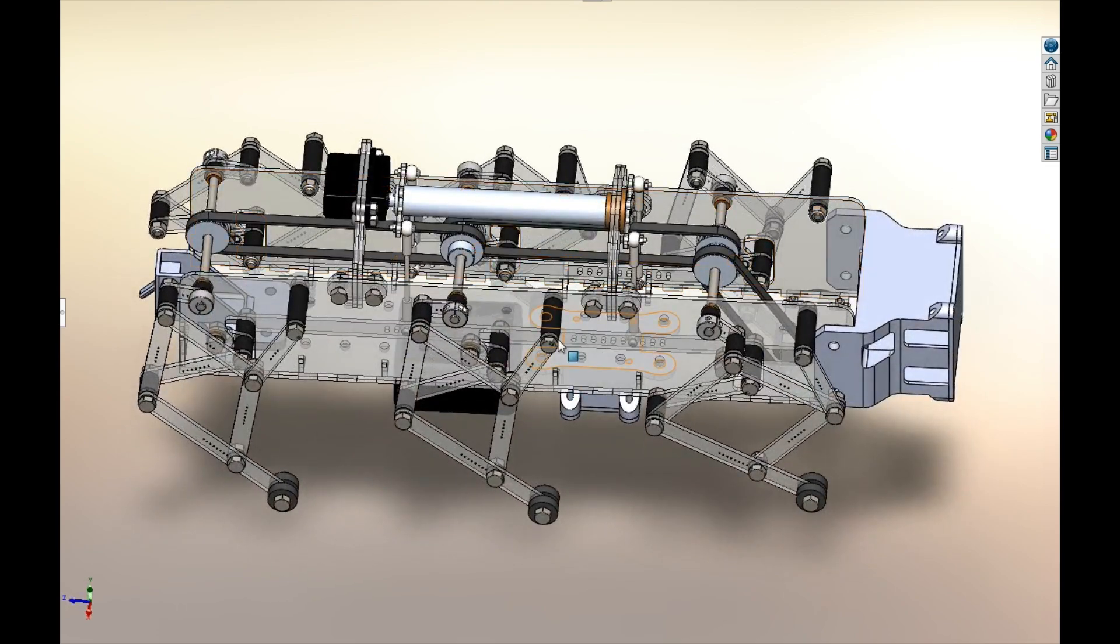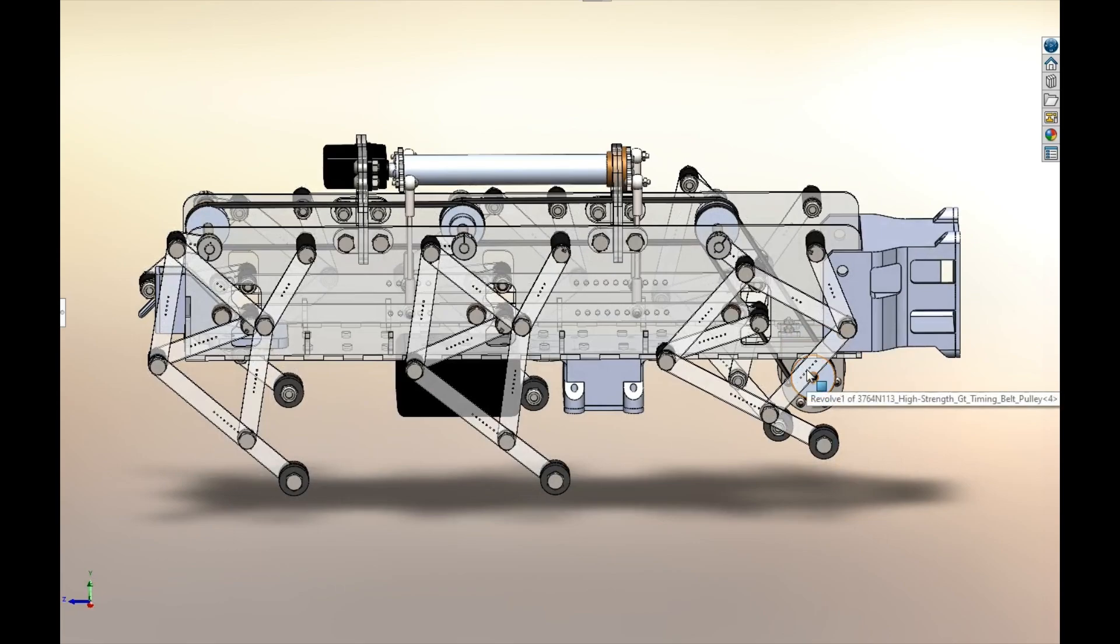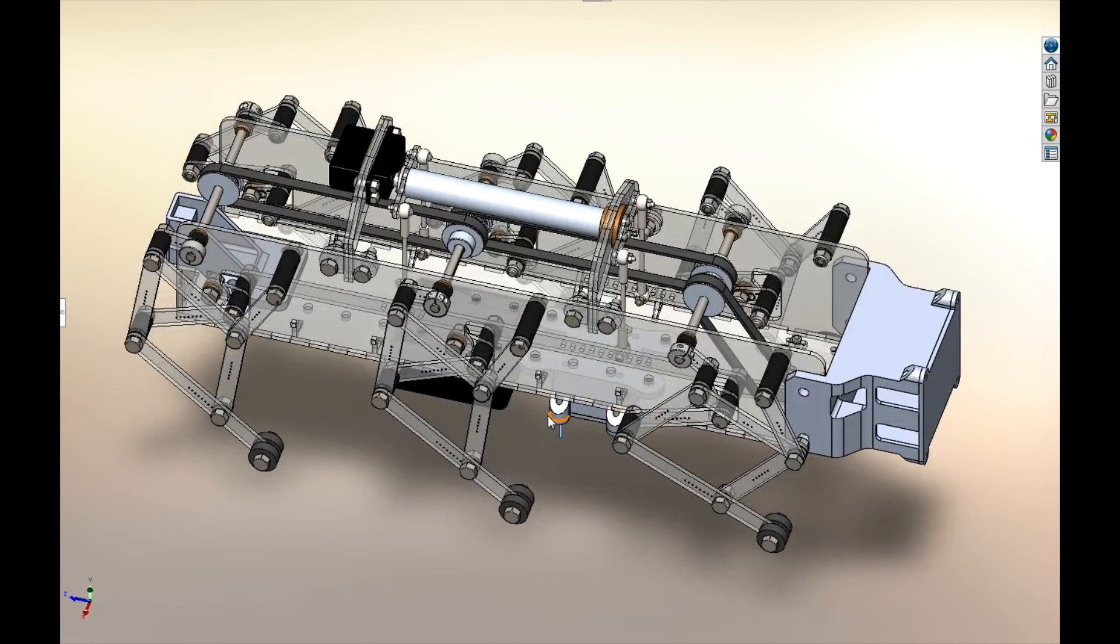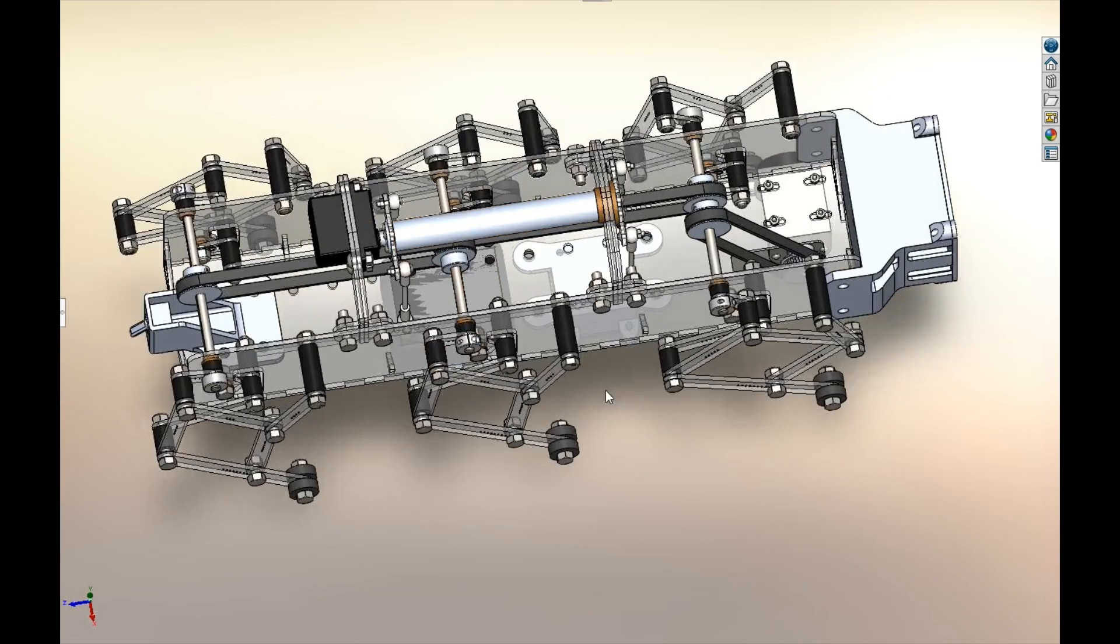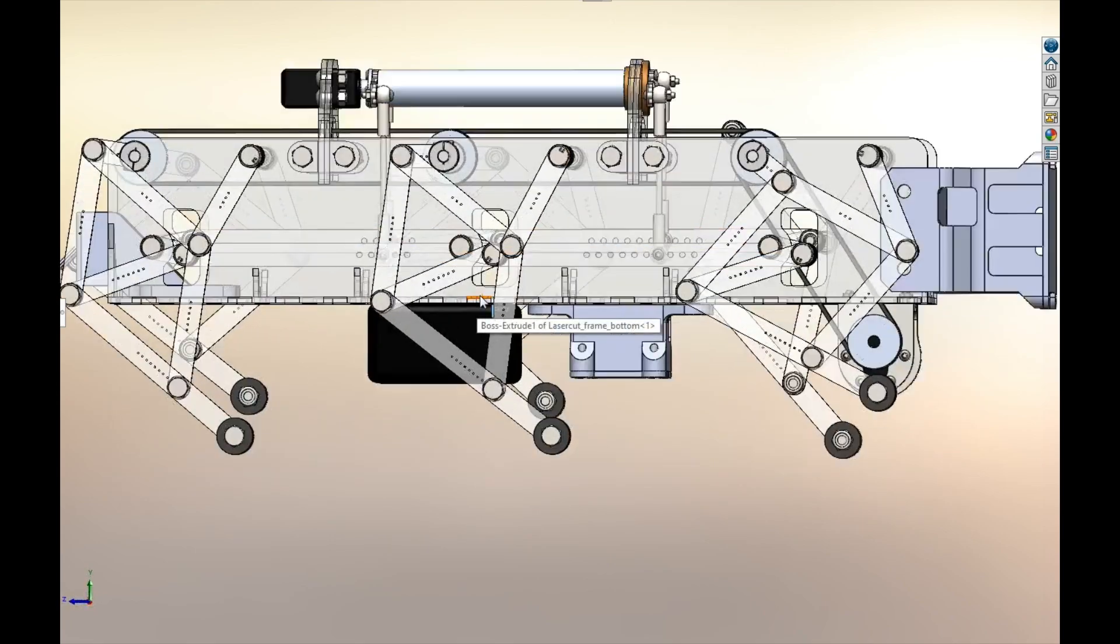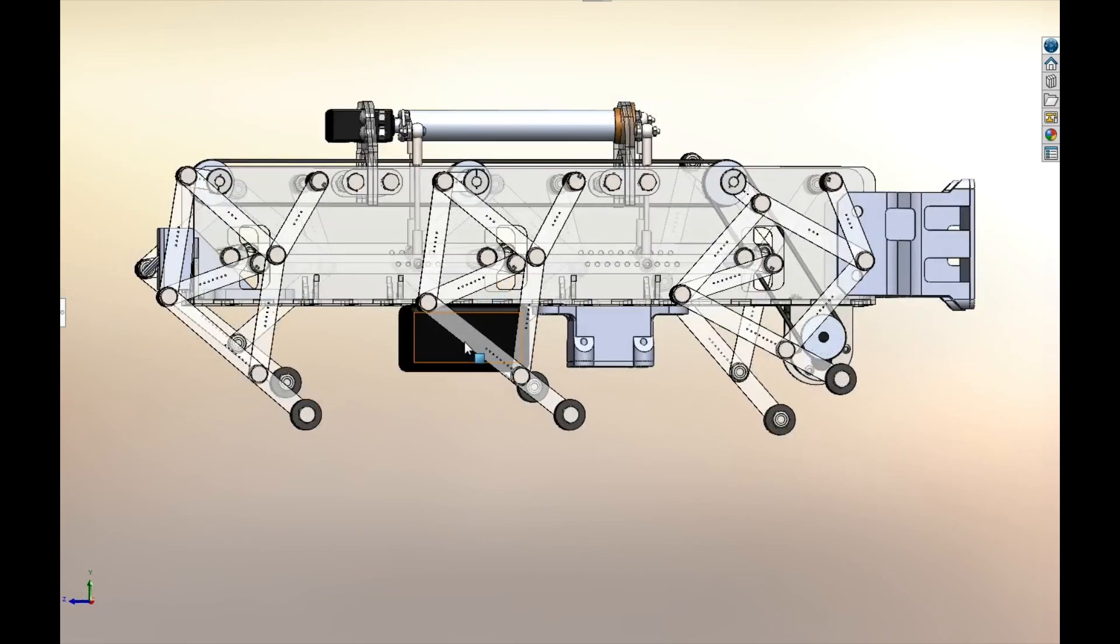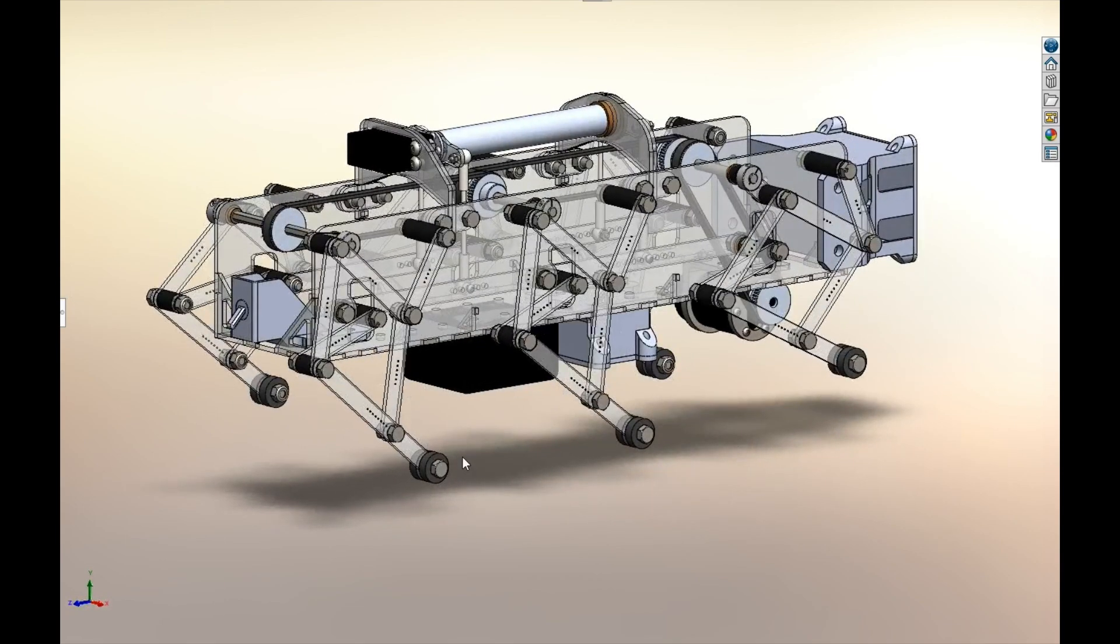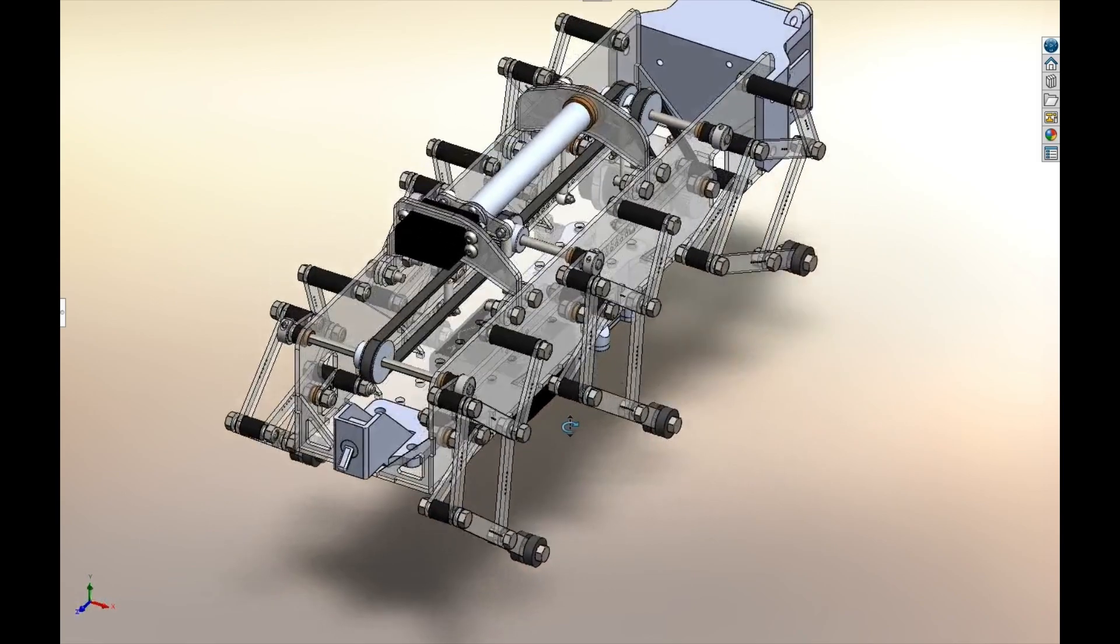So all six legs are driven by this one motor and they're in phase with each other, so they never get out of step. It's always one step per cycle on all six legs at all times. The center legs are 180 degrees out of phase with the outer legs on each side, and left versus right, they're also 180 degrees out of phase.